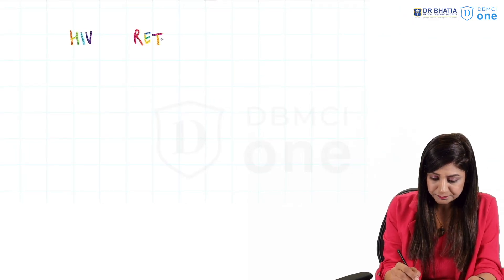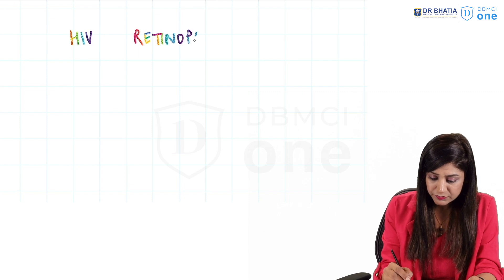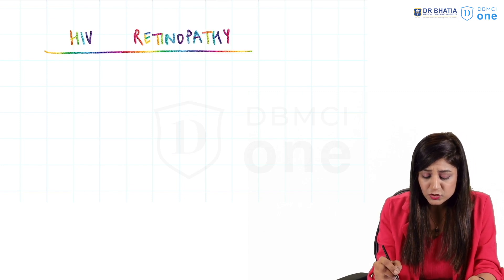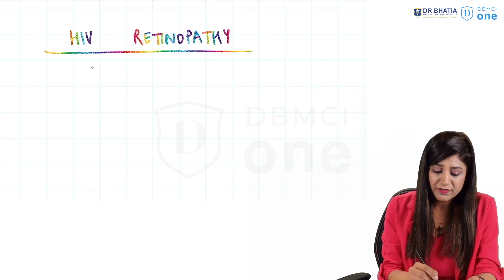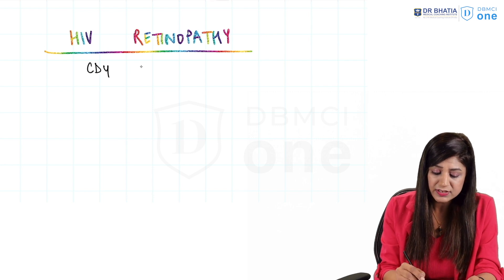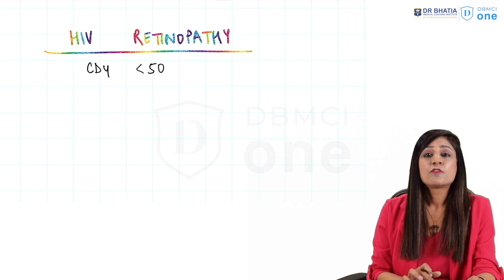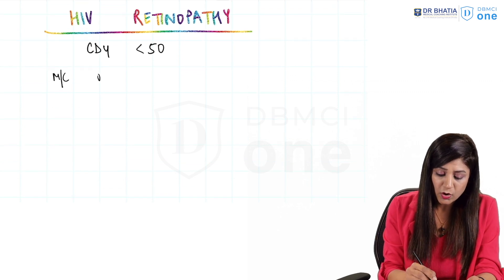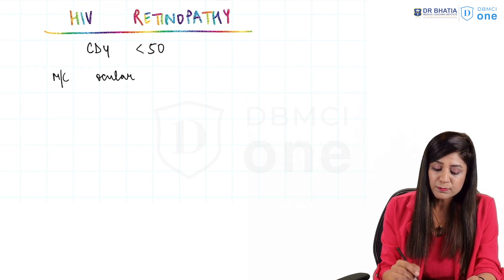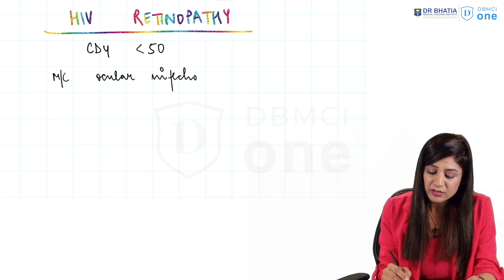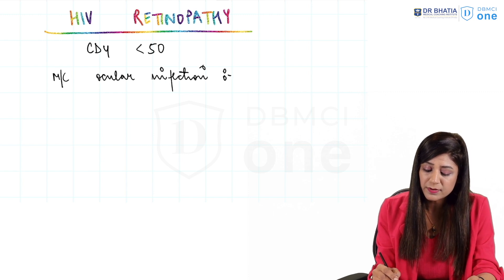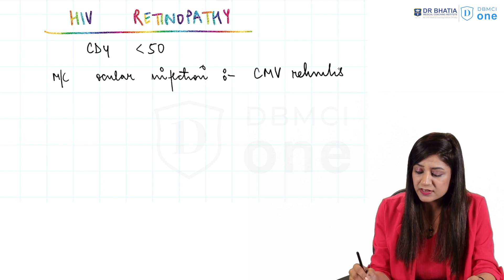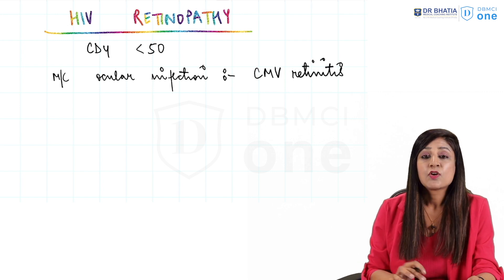HIV retinopathy is found in HIV positive patients when the CD4 count is less than 50. What are the infections that can take place? The most common ocular infection in this patient, always remember, is CMV retinitis.